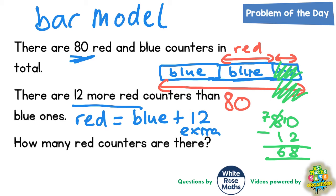So if we knock the 12 off the 80 then these two sections together of the bar model must be worth 68. But these two sections are the same size because we've knocked off the extra 12 red ones. So if we split the 68 into 2 then that means we've got 34 in this section and 34 in this section.